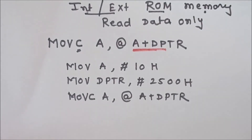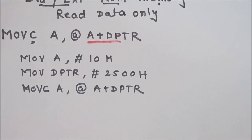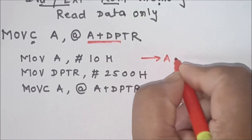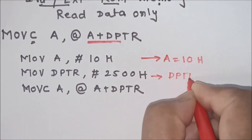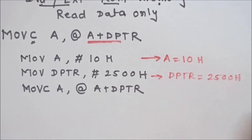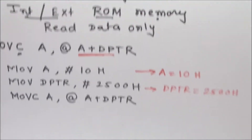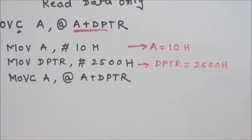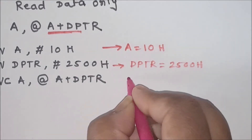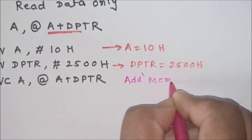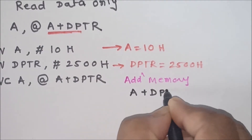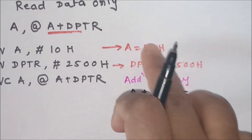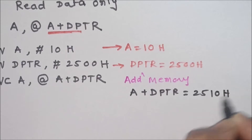The microcontroller executes the first instruction, storing 10h in the accumulator. Then it executes the second instruction, storing 2500h in DPTR. Next, the MOVC instruction is executed — that is, read data from ROM memory. The microcontroller calculates the address of memory by adding the contents of the accumulator and DPTR: 2500h plus 10h equals 2510h.